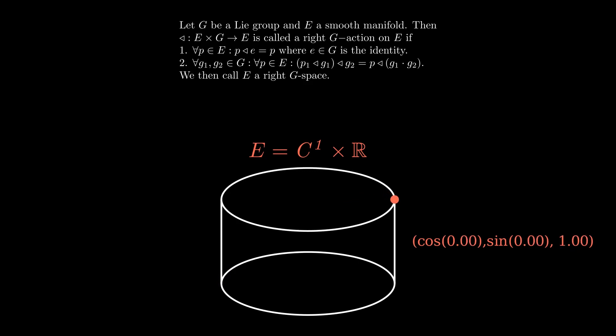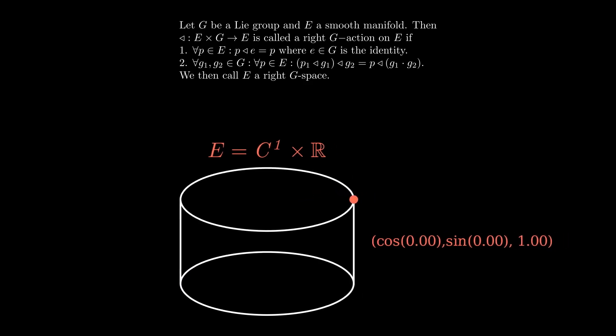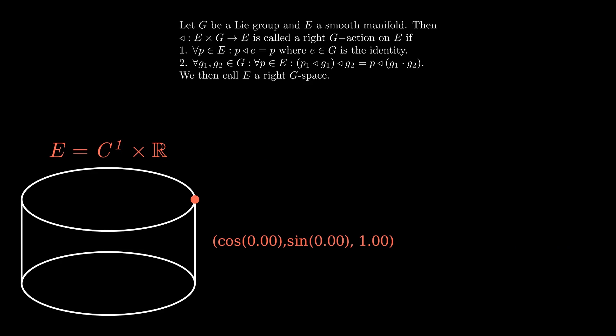We can now define our right G-action. If we take a real number minus one, our right G-action just subtracts from the last coordinate. We can look at a few more numbers.